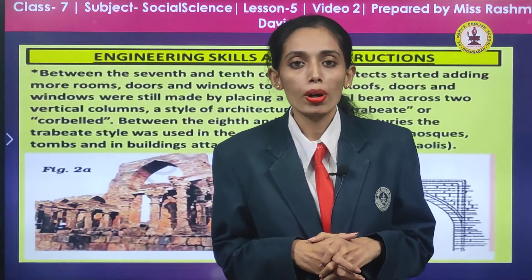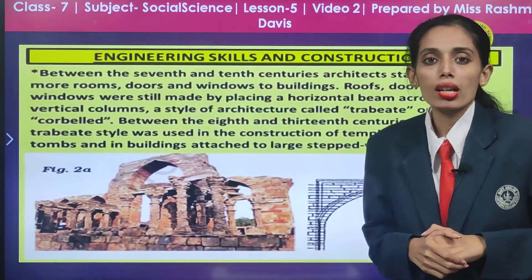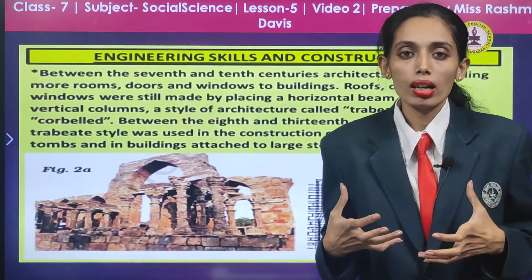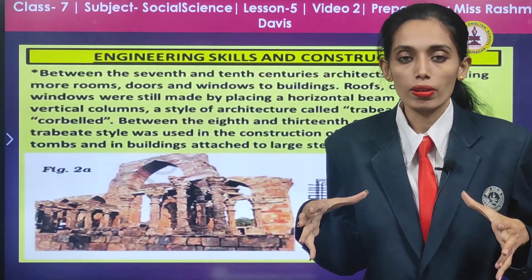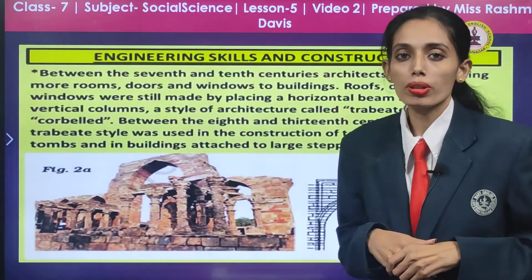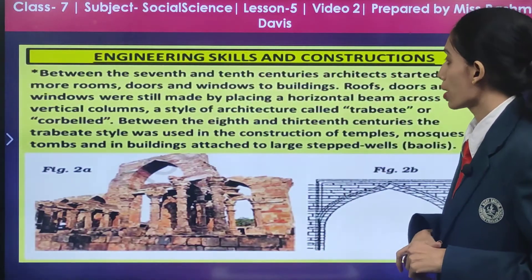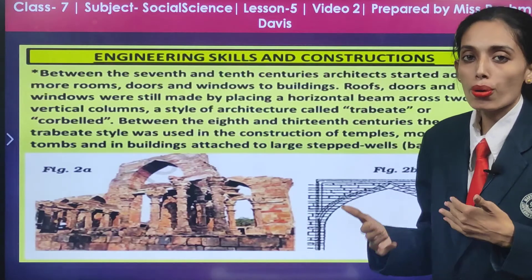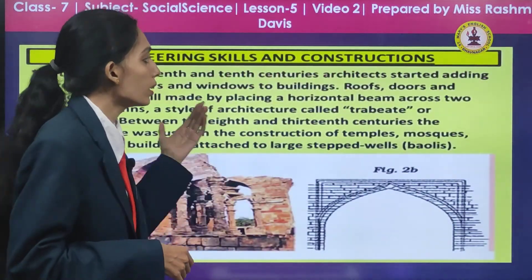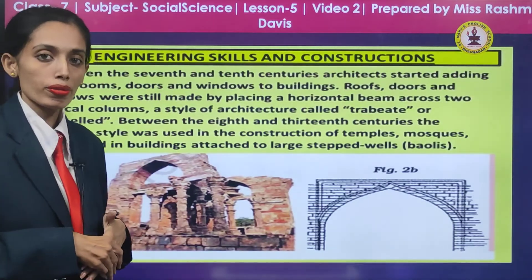Today we are going to talk about the engineering skills and the construction. For making a fine monument, we need people who are skilled and talented who can bring out this beautiful work. Between the 7th and 10th century, architects started adding more rooms, doors and windows to the structure. Earlier they didn't have the thatched type of roof, but now they do.